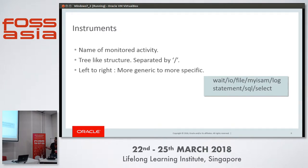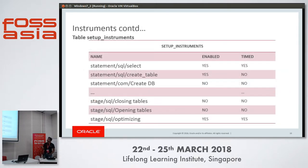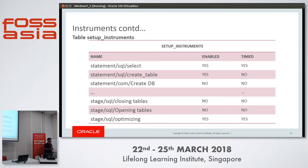Similarly, we have the instrument statement/sql/select, meaning Performance Schema has the capability to monitor or instrument SELECT statements. In MySQL 5.7 GA we had 1,000-plus instruments, meaning we monitor 1,000-plus activities when the server is running. All those activity names are stored in the performance_schema.setup_instruments table. If you look into this table you will see all the activities that Performance Schema monitors.